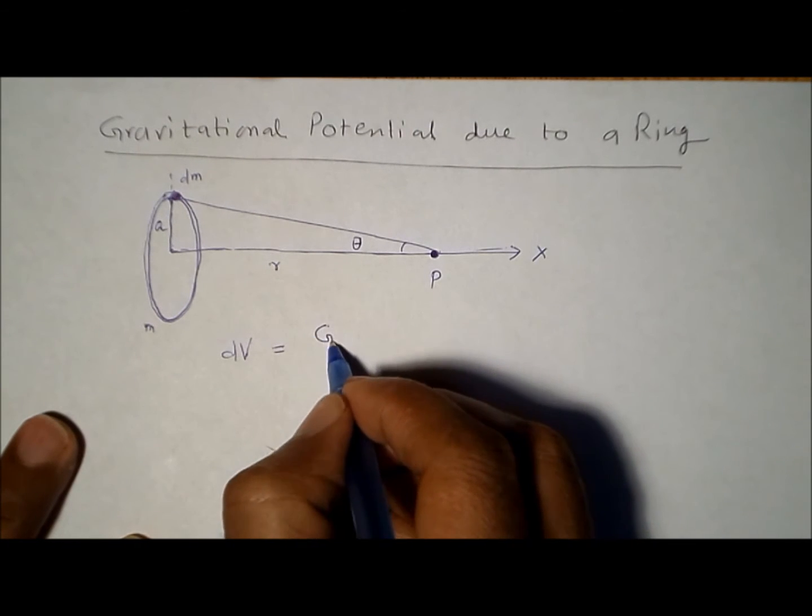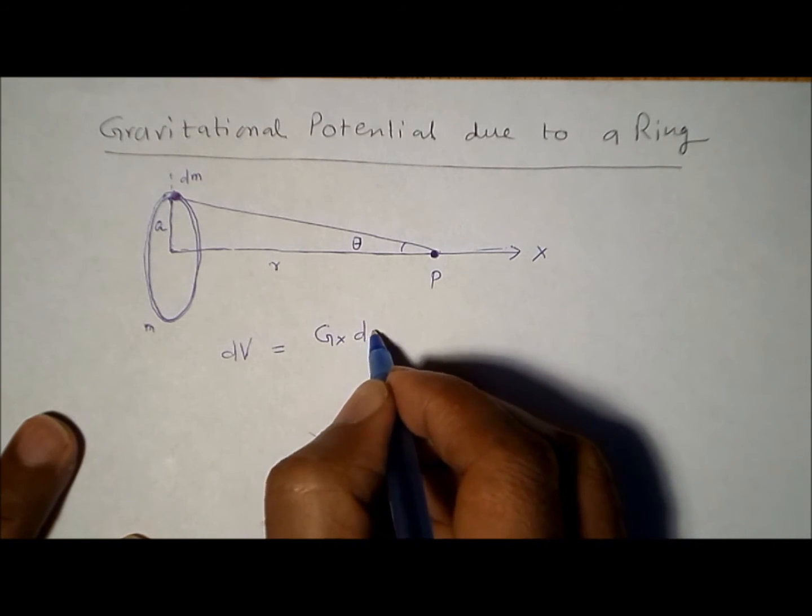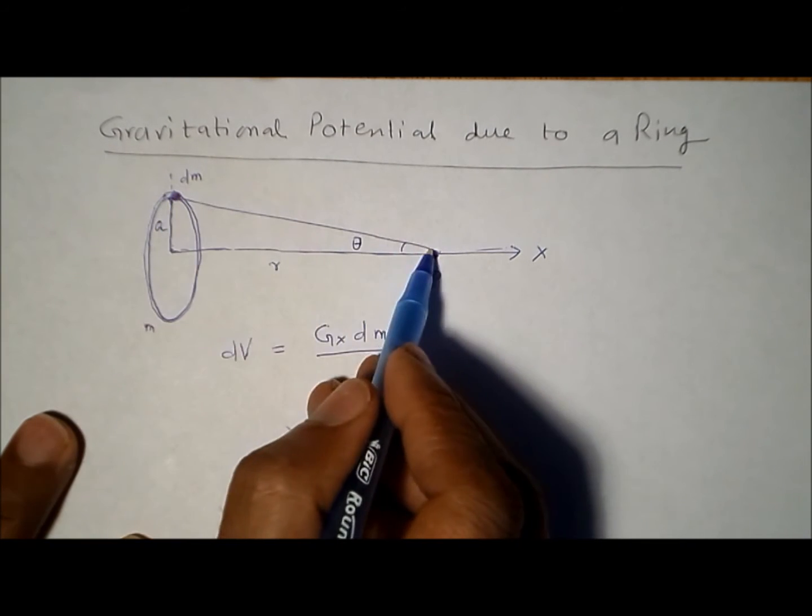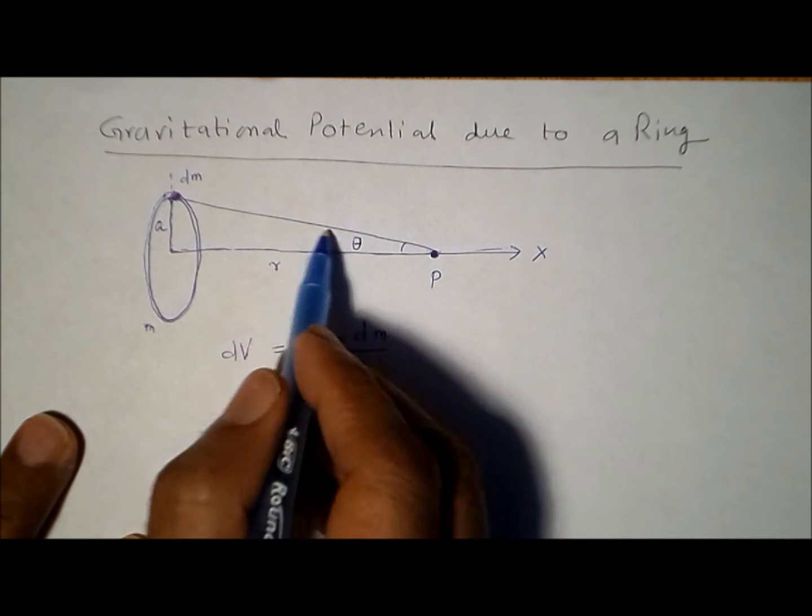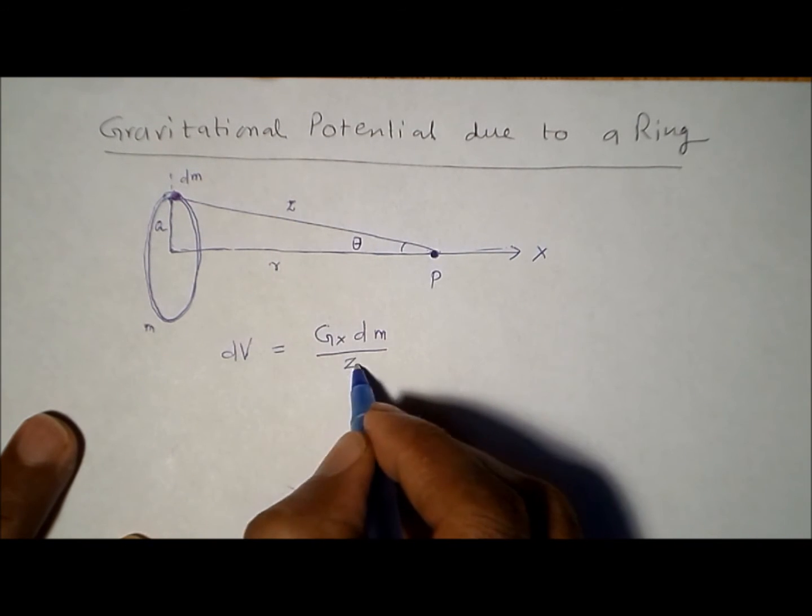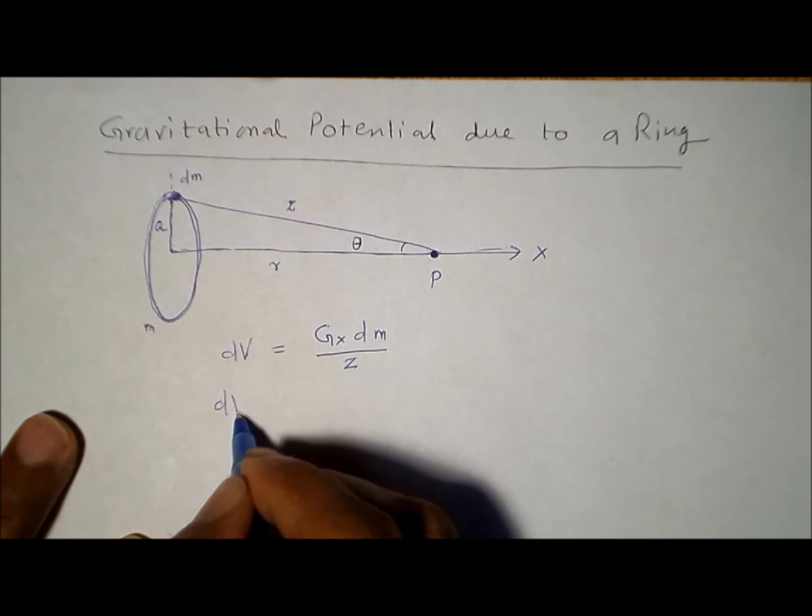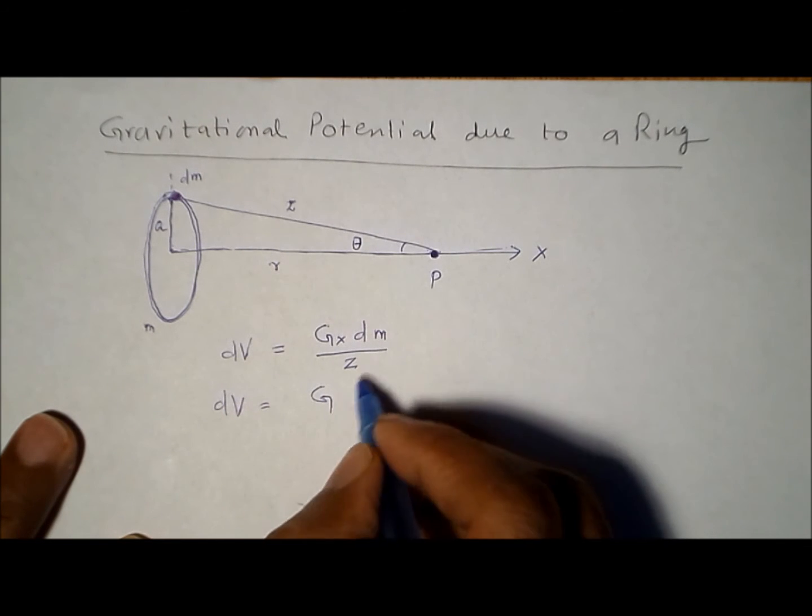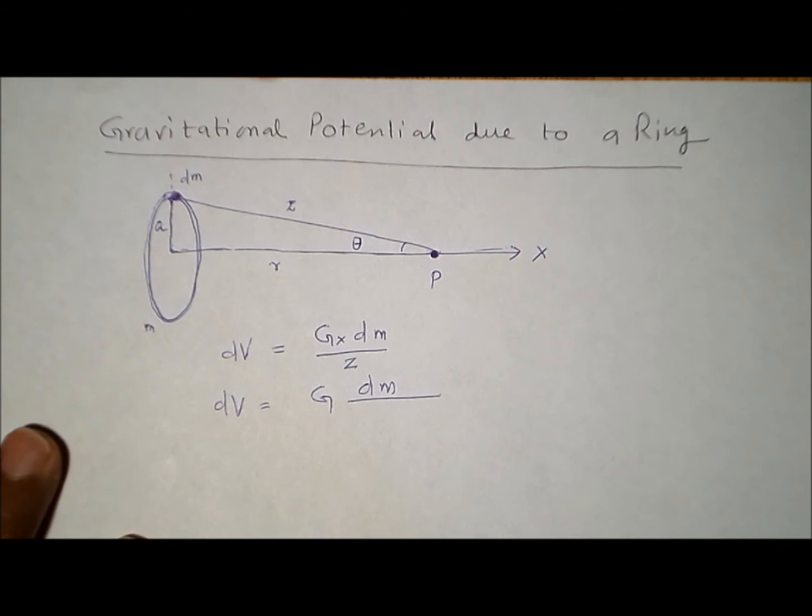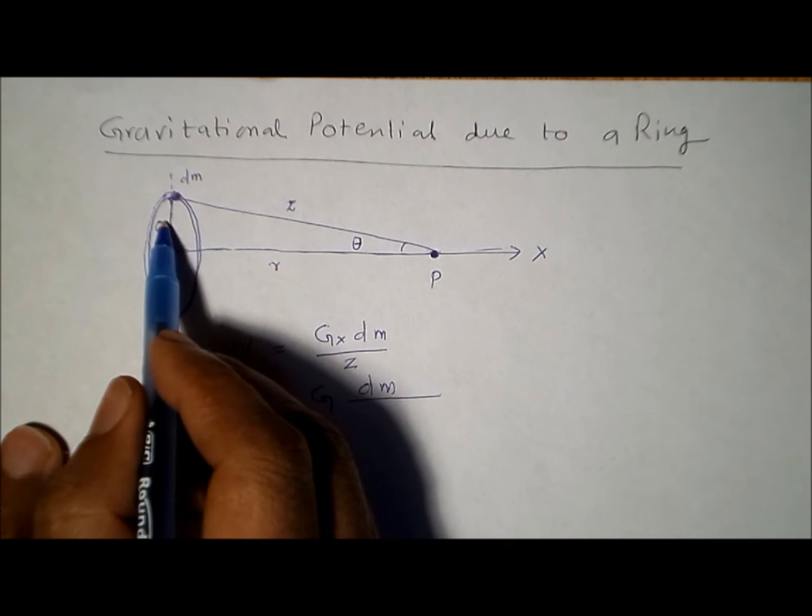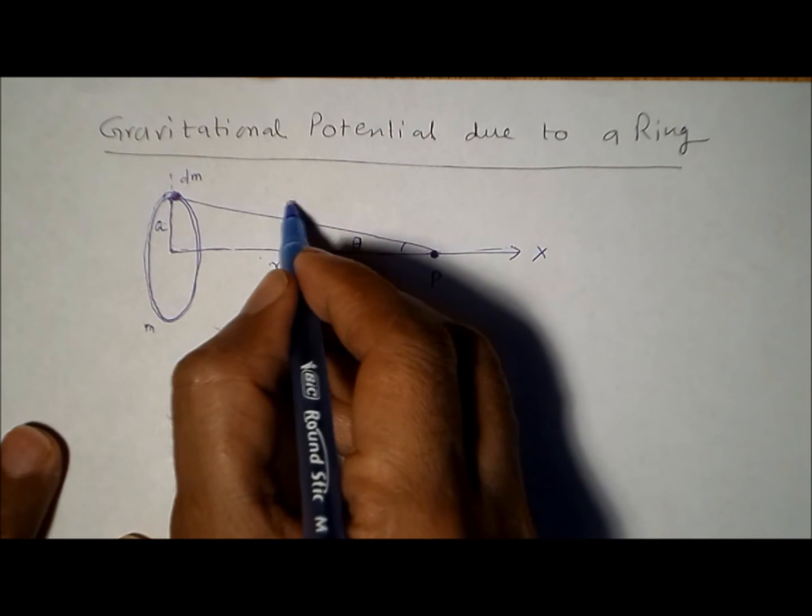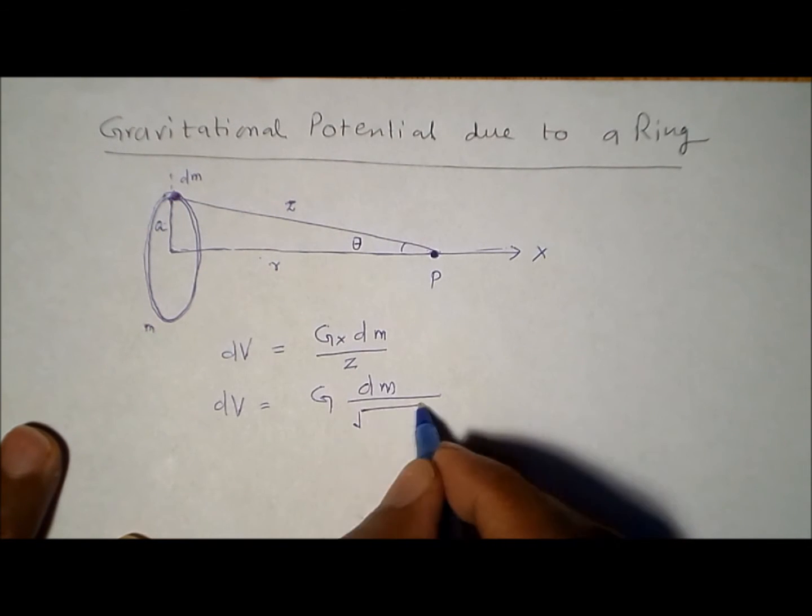We know that the potential is given by G multiplied by mass dm divided by the distance between these two points. In this case, this distance is Z. Now this distance Z is given by dm divided by square root of a squared plus r squared, because it's a right angle triangle.